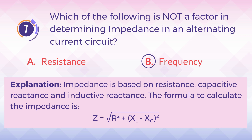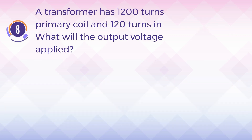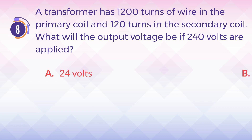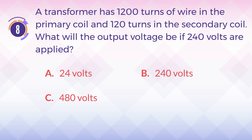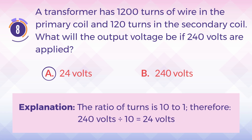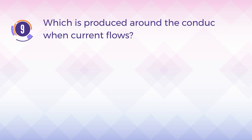Number eight: a transformer has 1200 turns of wire in the primary coil and 120 turns in the secondary coil. What will the output voltage be if 240 volts are applied? A) 24 volts, B) 240 volts, C) 480 volts. The correct answer is A) 24 volts. Explanation: the ratio of turns is 10 to 1, therefore 240 divided by 10 equals 24 volts secondary.